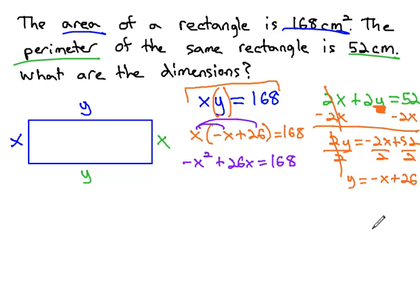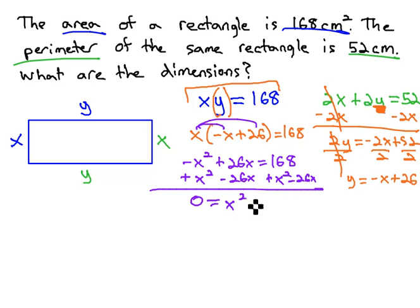We need the equation to equal zero. So, let's add x squared and subtract 26x, keeping the x squared positive. And we end up with zero equals x squared minus 26x plus 168.